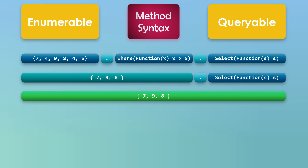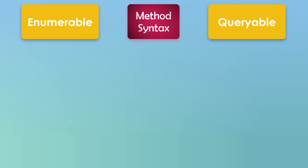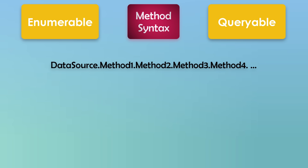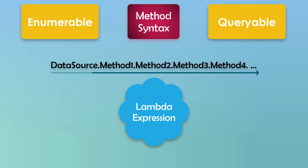To summarize method syntax: we set the methods after each other, and the order of the methods is very important because the execution happens in the same order they are written. Depending on what you need to do, you set the different methods in the correct order to get the correct result. We can use all methods from both classes, enumerable and queryable, and to use any method we have to use a lambda expression.